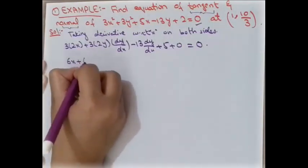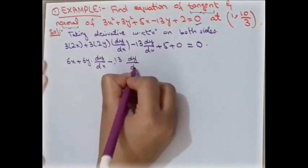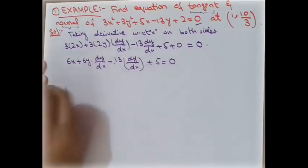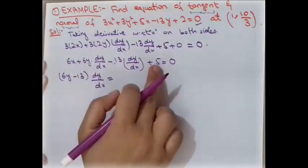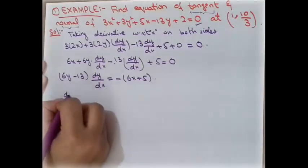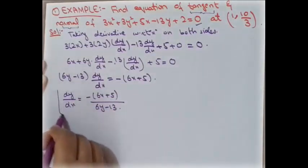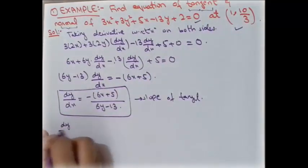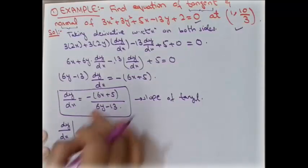Simplifying: 6x + 6y(dy/dx) − 13(dy/dx) + 5 = 0. Taking dy/dx common from the relevant terms: (6y − 13)(dy/dx) = −(6x + 5). Therefore dy/dx = −(6x + 5)/(6y − 13). Now we find the slope of the tangent at the point (1, 10/3).